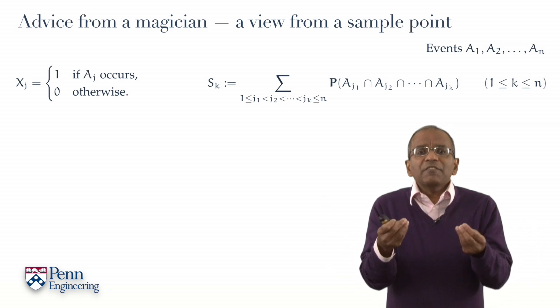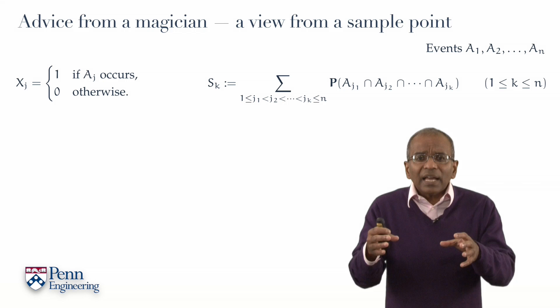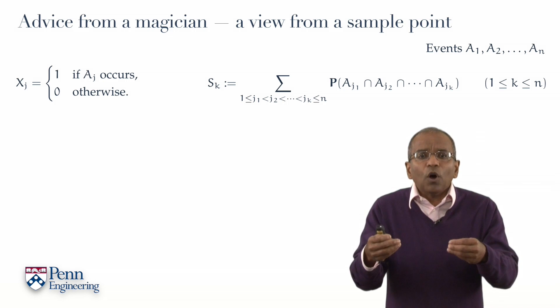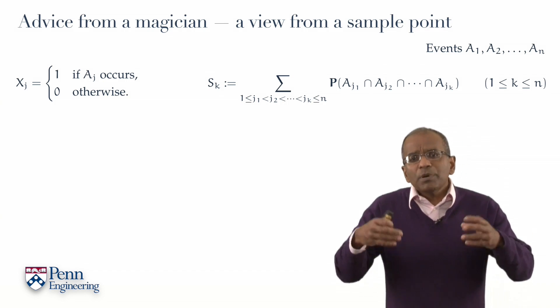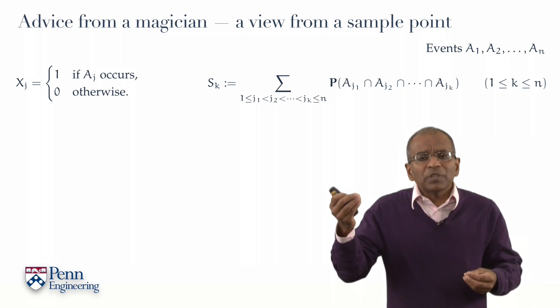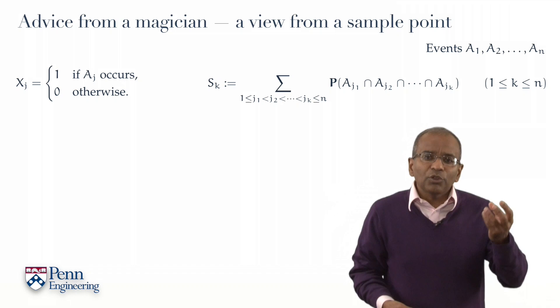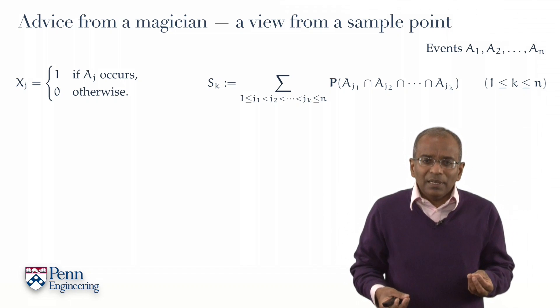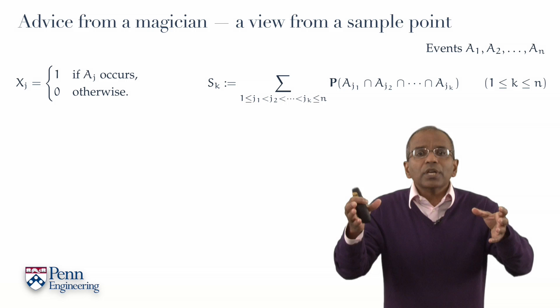Let's say we fix any value k between 1 and n. Pick any collection of k out of the n events. It's an arbitrary collection, so let's tag them with generic indices j1, j2, j3 through j sub k.